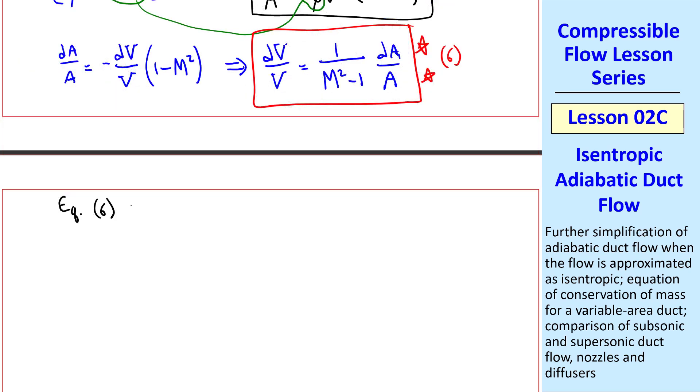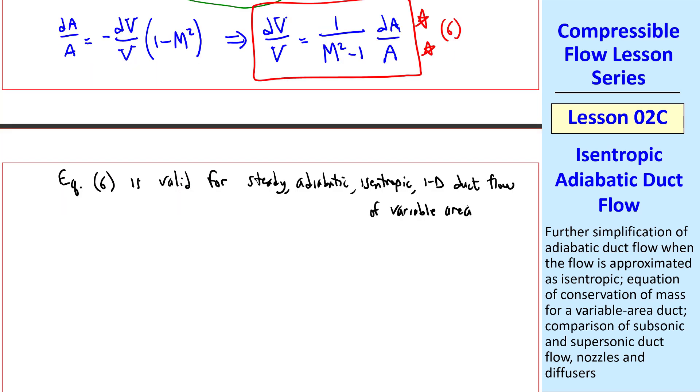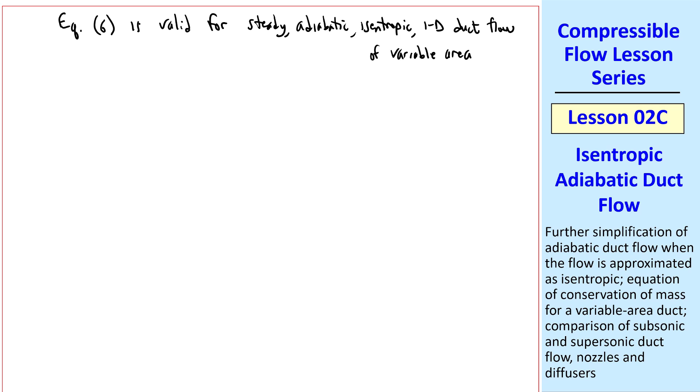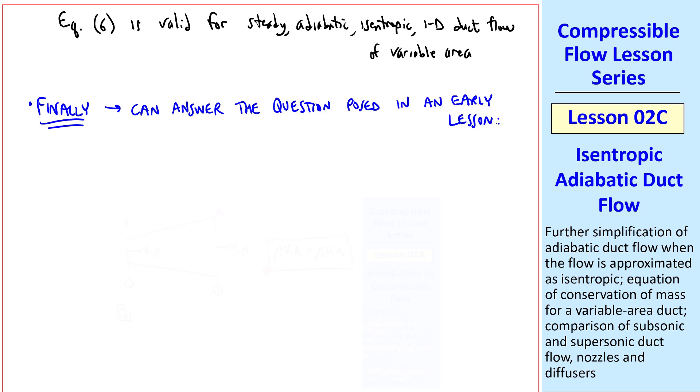And we note that equation 6 is valid for steady, adiabatic, isentropic now, 1D duct flow of variable area. We haven't even made the ideal gas approximation yet. Finally, we can answer the question posed in an early lesson.